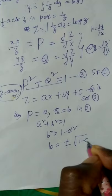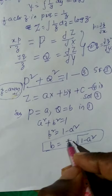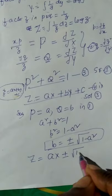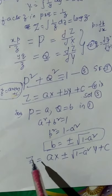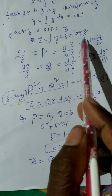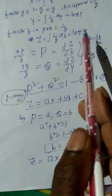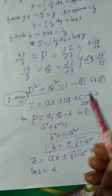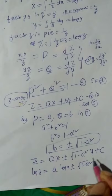Substituting B = ±√(1 − A²) in the complete solution Z = AX + BY + C gives Z = AX ± √(1 − A²)·Y + C. In the final solution, we substitute capital Z = log z, capital X = log x, and capital Y = log y. Therefore, log z = A·log x ± √(1 − A²)·log y + C. This is the complete solution of the given PDE.